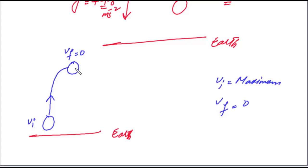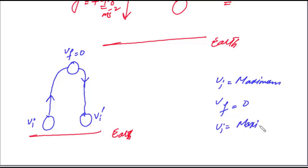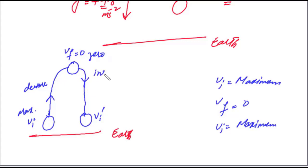Maximum height پر velocity zero ہونے کے بعد ball تھوڑی دیر رکتی ہے، پھر نیچے کی طرف آنا شروع ہوتی ہے۔ جب یہ نیچے آئے گی تو دوبارہ اس کی velocity بڑھنا شروع ہوگی۔ واپس آکر ابتدائی point پر اس کی velocity vi' دوبارہ maximum ہو جائے گی۔